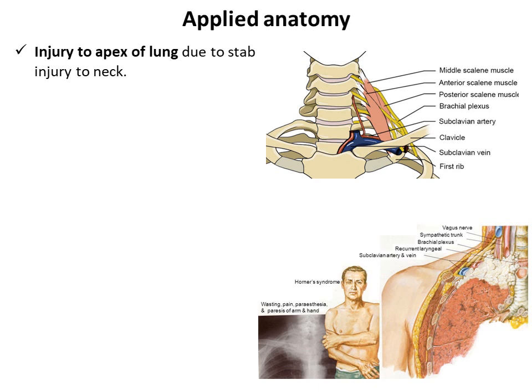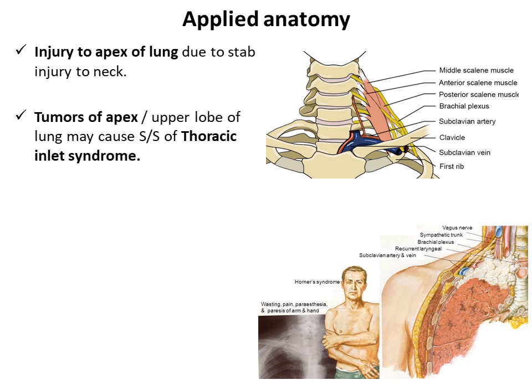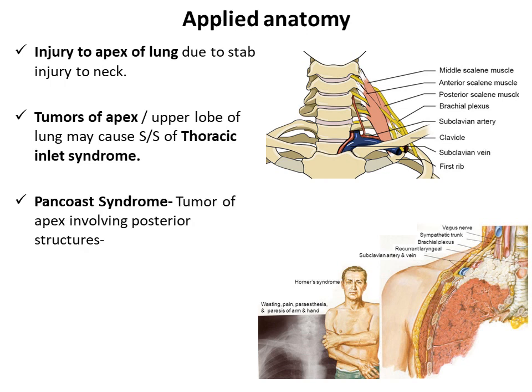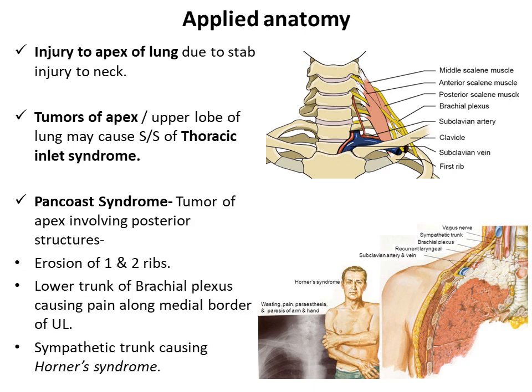The apex of the lung is vulnerable to stab injuries to the neck, which may lead to pneumothorax. Tumours of the apex or upper lobe of the lung may compress adjoining structures passing through the thoracic inlet, leading to thoracic inlet syndrome. These tumours are also called Pancoast tumours. They may erode the first or second ribs. Involvement of the lower trunk of the brachial plexus may cause pain along the medial border of the upper limb or wasting of small muscles of the hand. Involvement of the sympathetic trunk may cause Horner's syndrome.